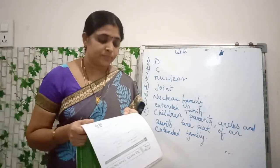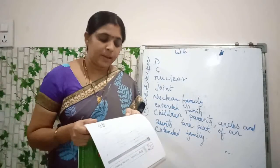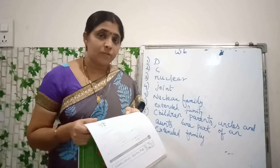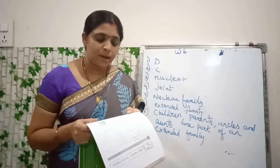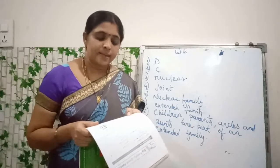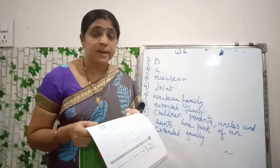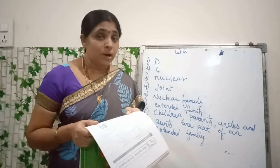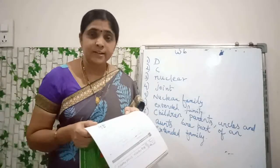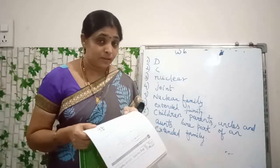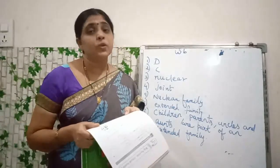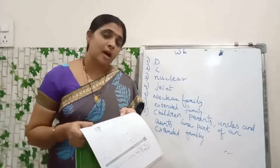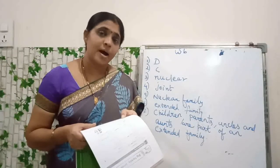Very short answers, fifth one: name the type of family shown in the picture. There are only children and their parents — so what is the answer, children? Nuclear family.